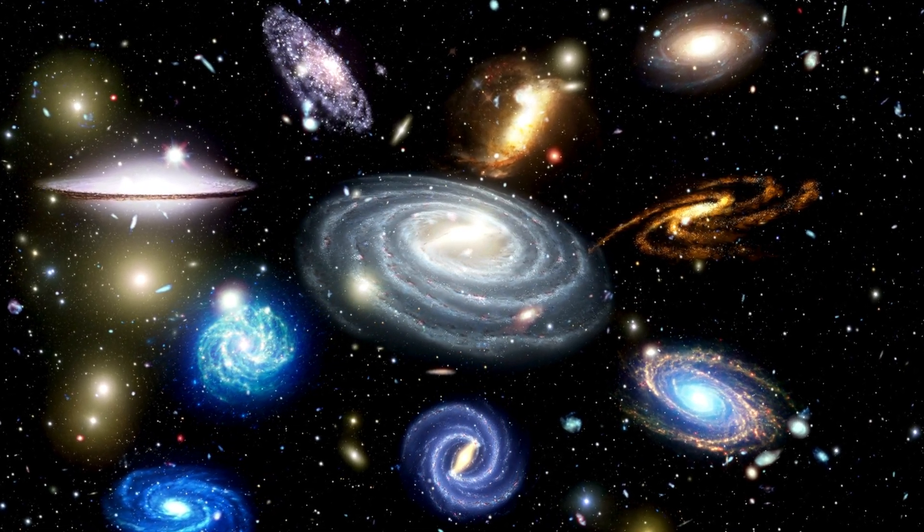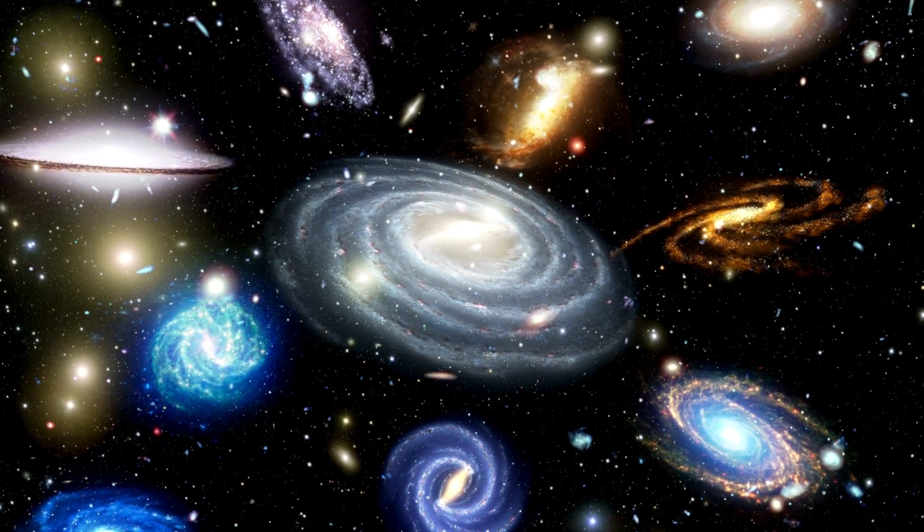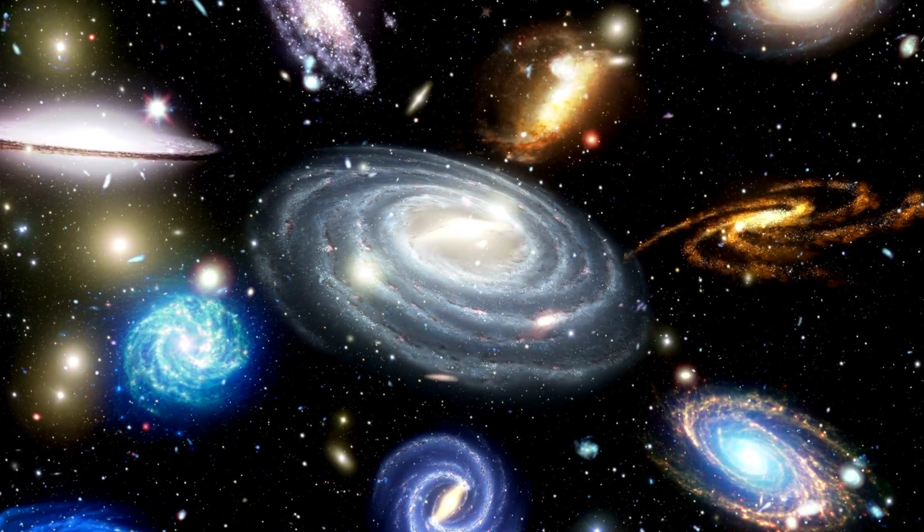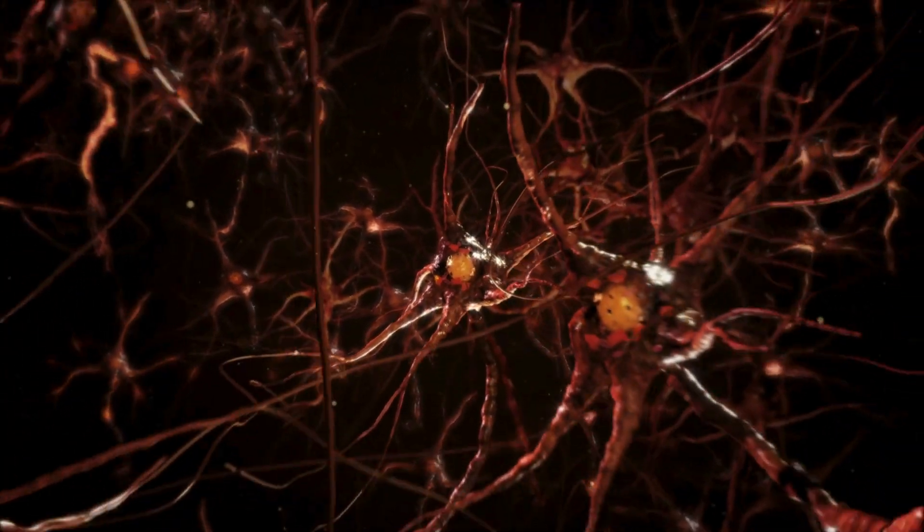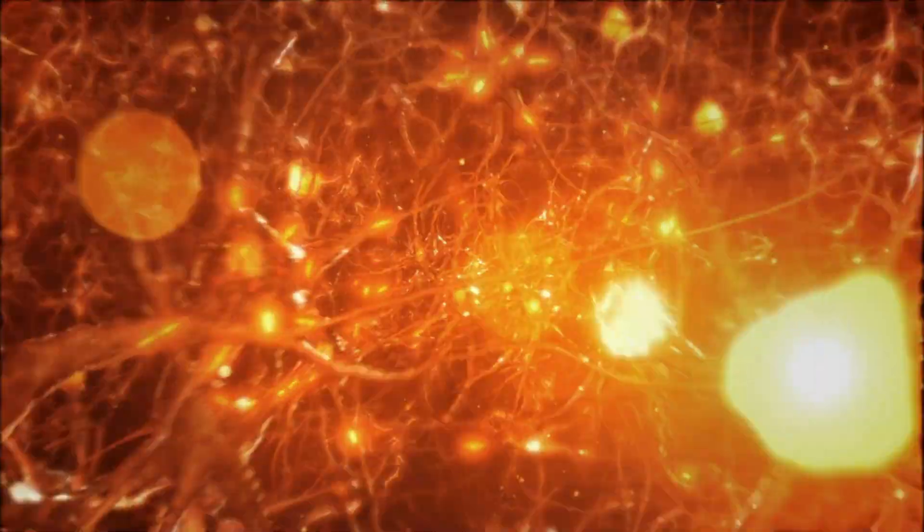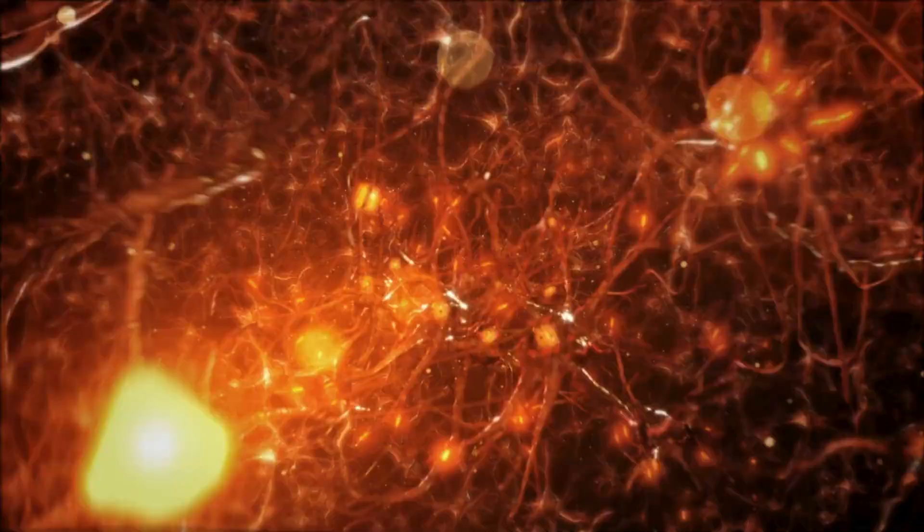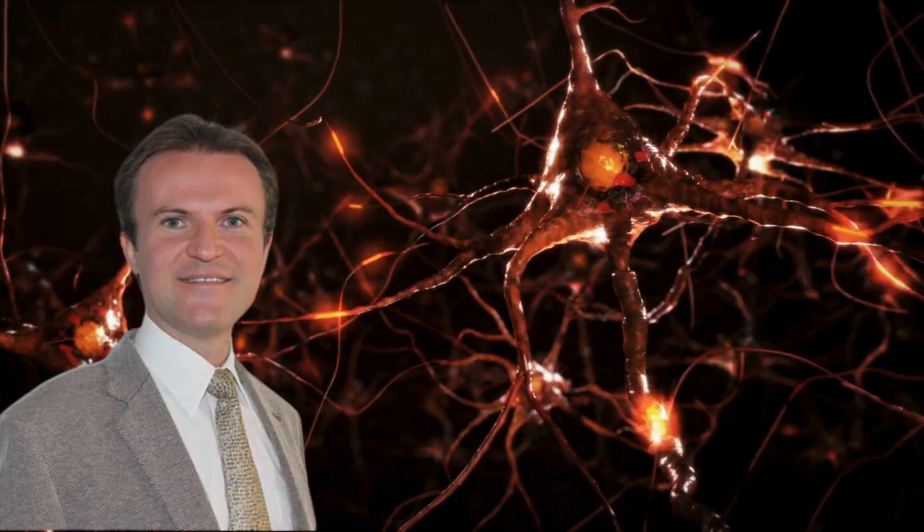The universe contains an estimated 100 billion galaxies, forming a cosmic web of filaments composed of ordinary and dark matter. Interestingly, this cosmic web looks surprisingly like a network of neurons in the brain. Vazza and Folletti's research showed that the distribution of matter in the cosmic web follows a similar pattern to the neuronal network in the brain.